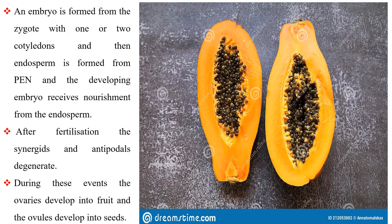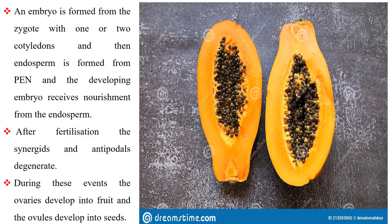An embryo is formed from the zygote with one or two cotyledons, and then endosperm is formed from PEN and the developing embryo receives nourishment from the endosperm. After fertilization, the synergids and the antipodals degenerate. During these events, the ovaries develop into fruit and the ovules develop into seeds.